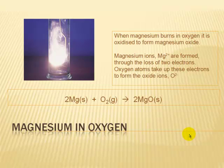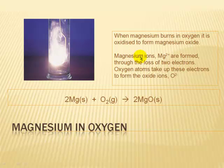Our third type of reaction is an oxidation reaction. This is the reaction between magnesium and oxygen. Magnesium burns in oxygen and is oxidized to form magnesium oxide — a brilliant white reaction. Magnesium ions, Mg²⁺, are formed through the loss of two electrons. These electrons are transferred to oxygen, which forms the oxide ion O²⁻. The equation is: 2Mg + O₂ → 2MgO, magnesium oxide.